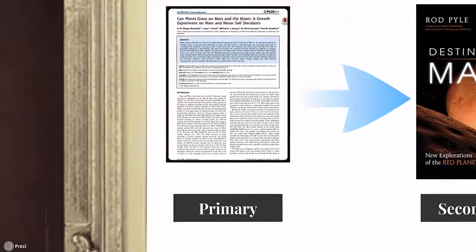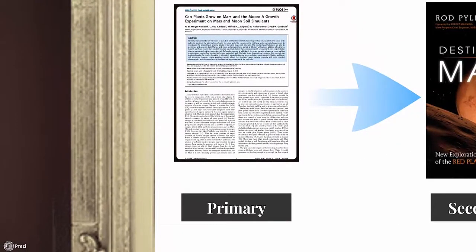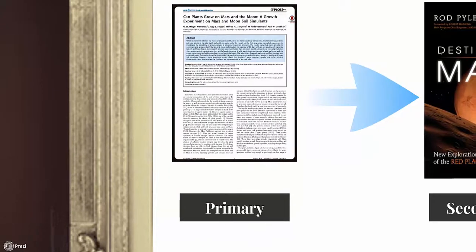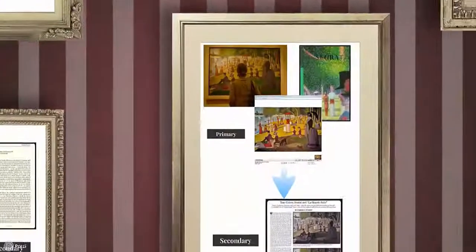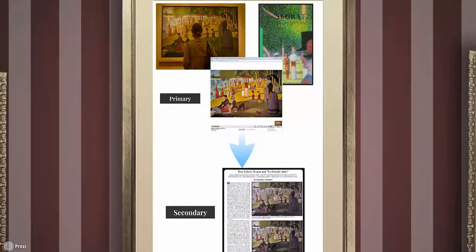A group of scientists do an experiment and write about their original findings in a journal article — this is a primary source. Another author then writes a book about the same topic, interpreting these scientists' original research, along with the original research of other scientists, as well as additional secondary sources. Because this book is analyzing other works, it's a secondary source.